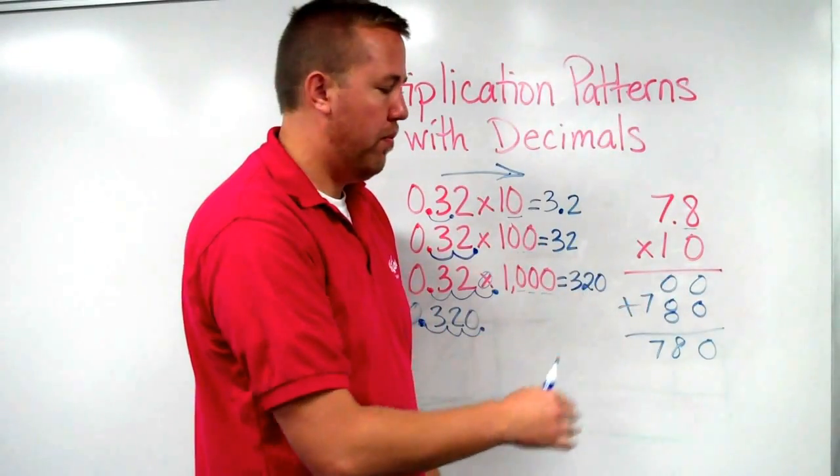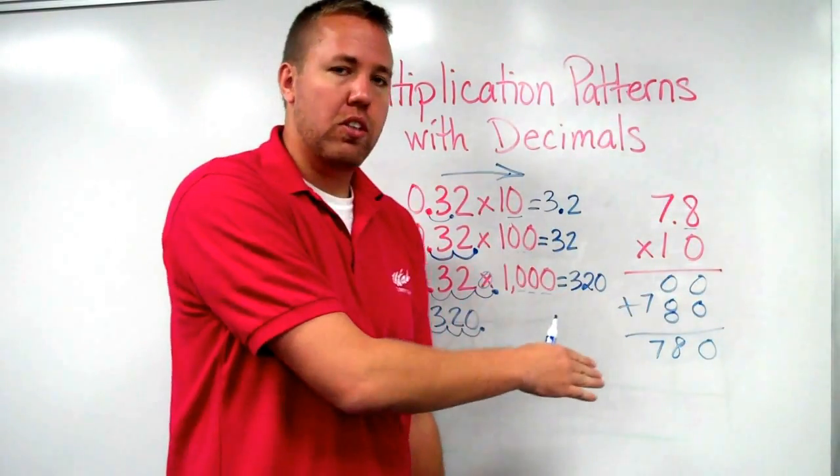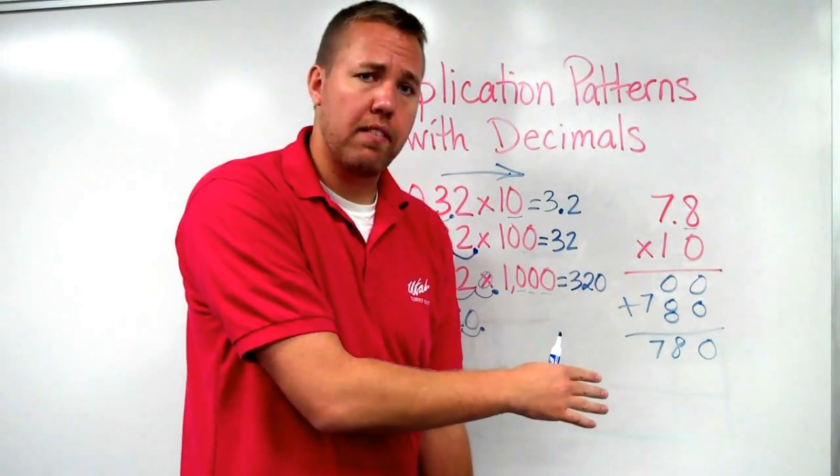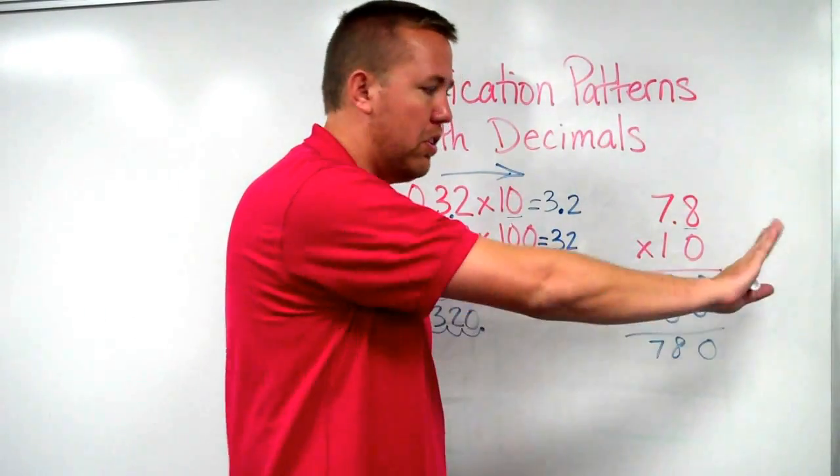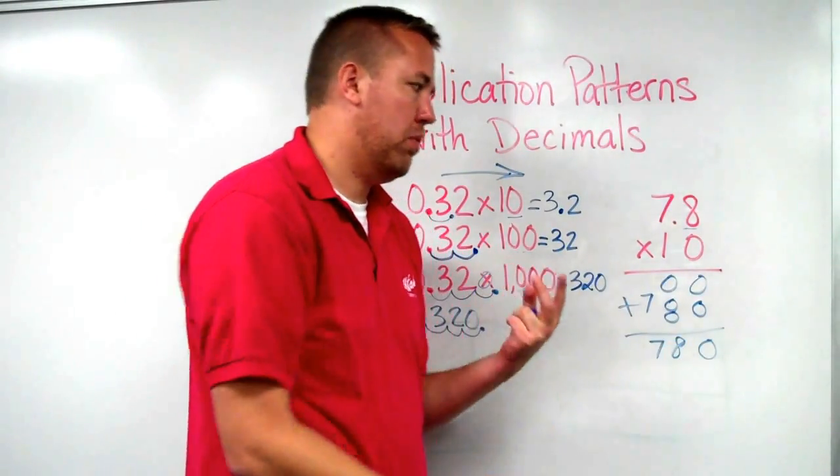In the problem, one digit after the decimal. Therefore, in the answer, there needs to be one digit after the decimal. If there are two digits past the decimal to the right of the decimal, there are going to be two digits in the answer to the right of the decimal.